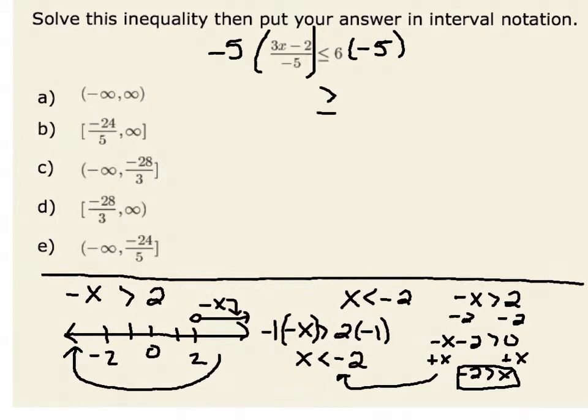I'd have on the left-hand side 3x minus 2 divided by negative 5 times negative 5, and we will notice that negative 5 divided by negative 5 cancels to make 1. So I'm left with 3x minus 2 is greater than or equal to 6 times negative 5, which is negative 30.